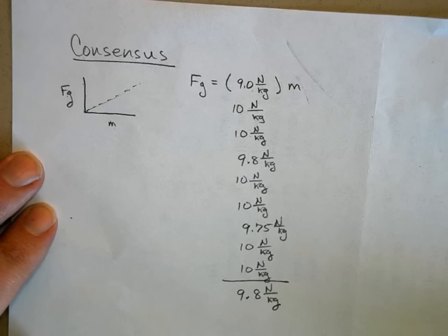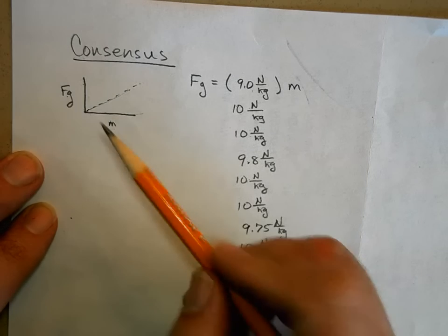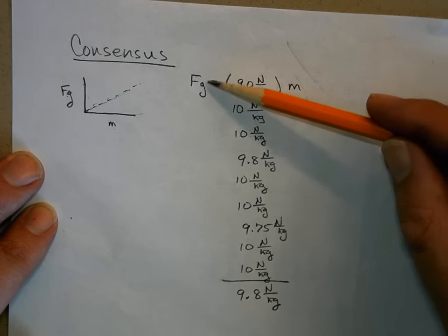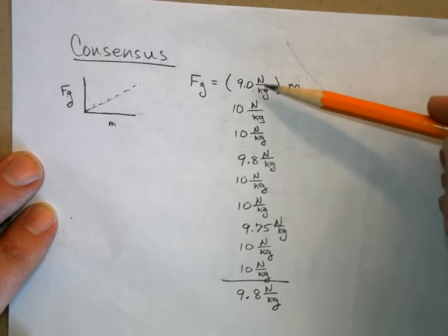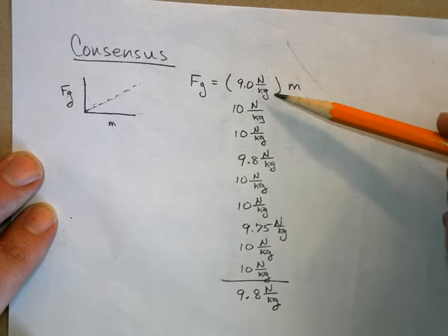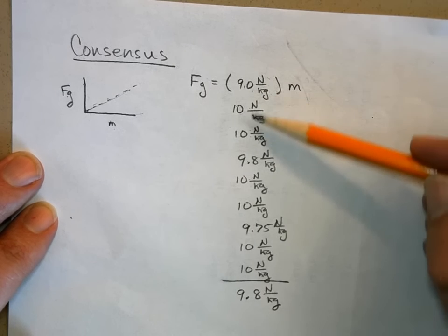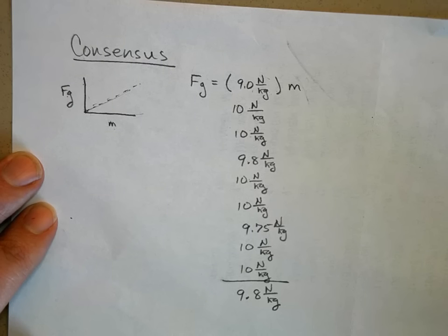This is the consensus for our weight versus mass lab. When we graphed the weight as a function of mass, it turned out to be a straight line. All the different groups plotted the force of gravity as a function of mass. The slope has units of newtons per kilogram — about 9 to 10 newtons per kilogram — and it averaged out to 9.8 newtons per kilogram, which is the correct value for the strength of Earth's gravity.